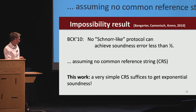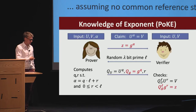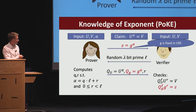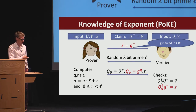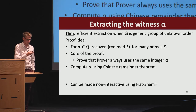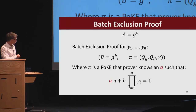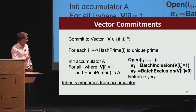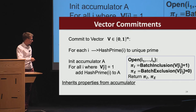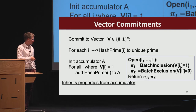We show that a very simple common reference string suffices to get exponential soundness. The way we do that is by forcing the prover to commit to alpha using an element fixed in the CRS, which forces it to use an integer alpha. Using this proof we can now get a batch exclusion proof by giving g to the b and a proof that this alpha is known—and this proof is constant size. From this batch exclusion proof, we finally get a vector commitment with constant size openings: using a batch inclusion proof for the elements where the vector is one, and a batch exclusion proof where the vector is zero.